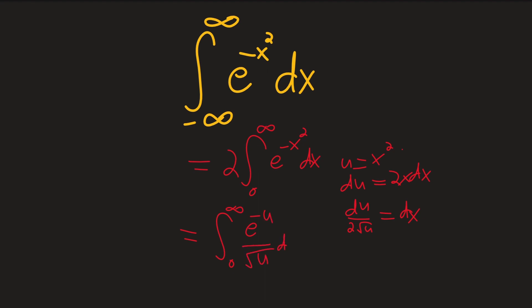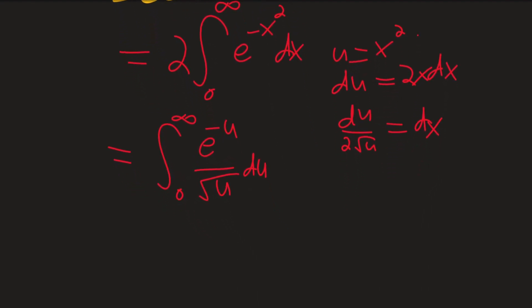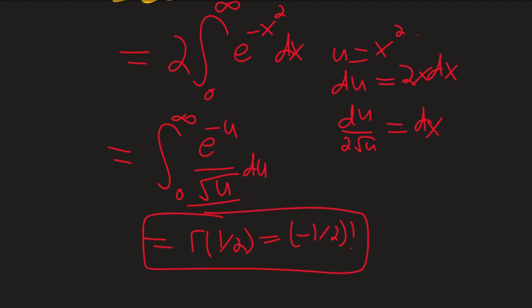The reason I'm breezing through all of this work is because this really isn't the interesting bit of the video. This is just manipulation to show that our actual Gaussian is just equal to gamma of one-half — or in other words, negative one-half factorial. This is really all I wanted to show with this bit, and we'll bring that back up towards the end.